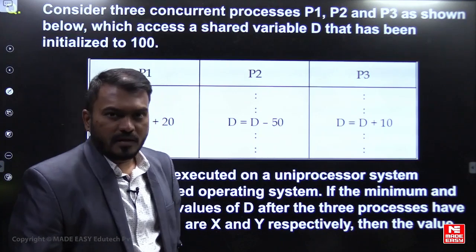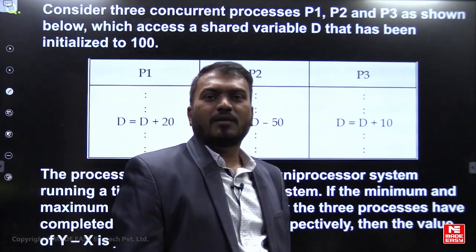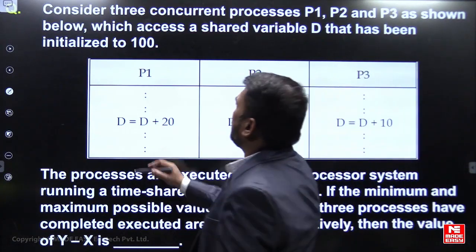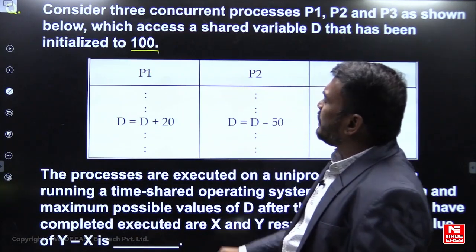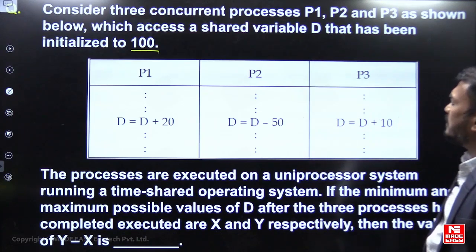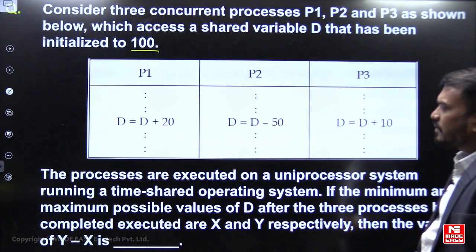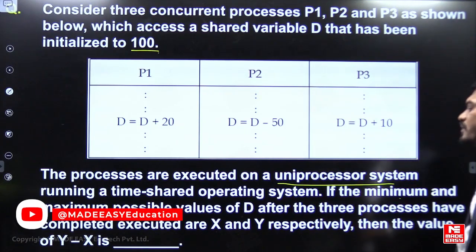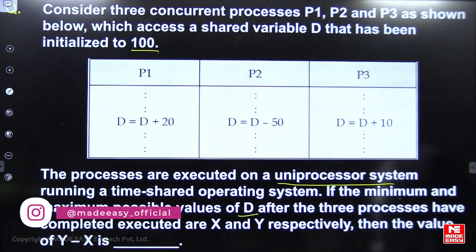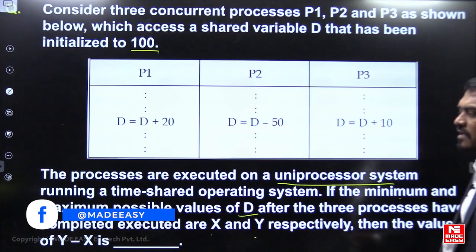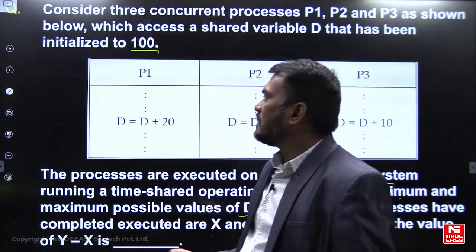This next question is based on concurrent programming. Consider three concurrent processes P1, P2, and P3 accessing a shared variable D initialized to 100. P1 increments D by 20, P2 decrements D by 50, and P3 increments D by 10. After execution on a uniprocessor time-sharing system, find the minimum and maximum possible values of D, and compute Y minus X.